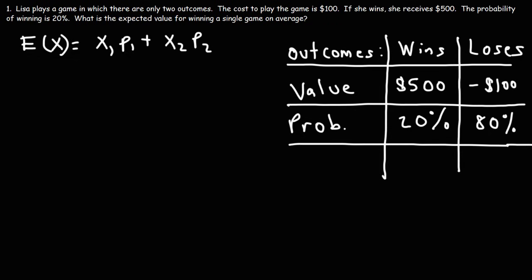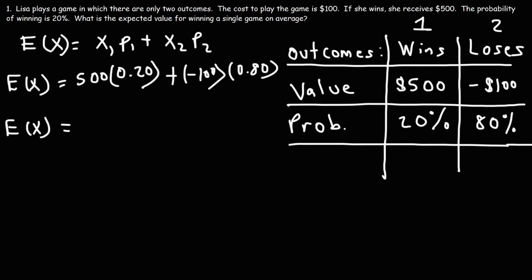So now we have enough information to calculate the expected value for winning in this game. So this is going to be number 1 and this is number 2. So X1 is the value of winning the game, that's going to be $500. P1 is the probability of winning. So we need to convert the percentage into a decimal. To convert percent to a decimal, divide by 100, or you can move the decimal point two units to the left. So 20% as a decimal is 0.20. Now X2 is the value of losing the game. In this case, that is negative 100. P2 is the probability of losing, which is 80% or 0.80. Now 500 times 0.20, that is 100. And negative 100 times 0.80 is negative 80. So the expected value of winning a game, on average, is $20.